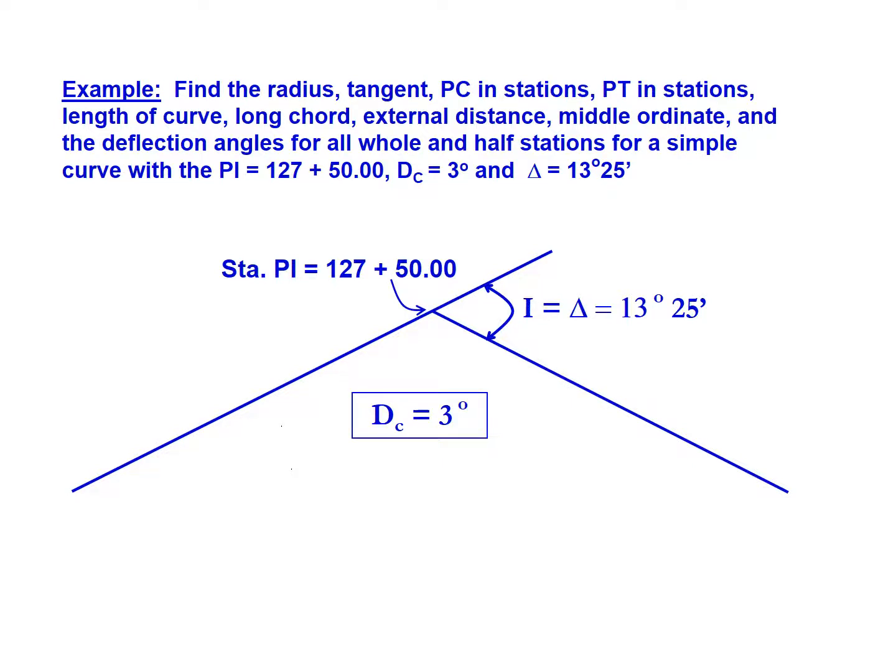In this example we're asked to find all the key components of a horizontal curve. We're told that the curve has a point of intersection of 127 plus 50. We know it's a three-degree curve and has an intersecting angle of 13 degrees 25 minutes.